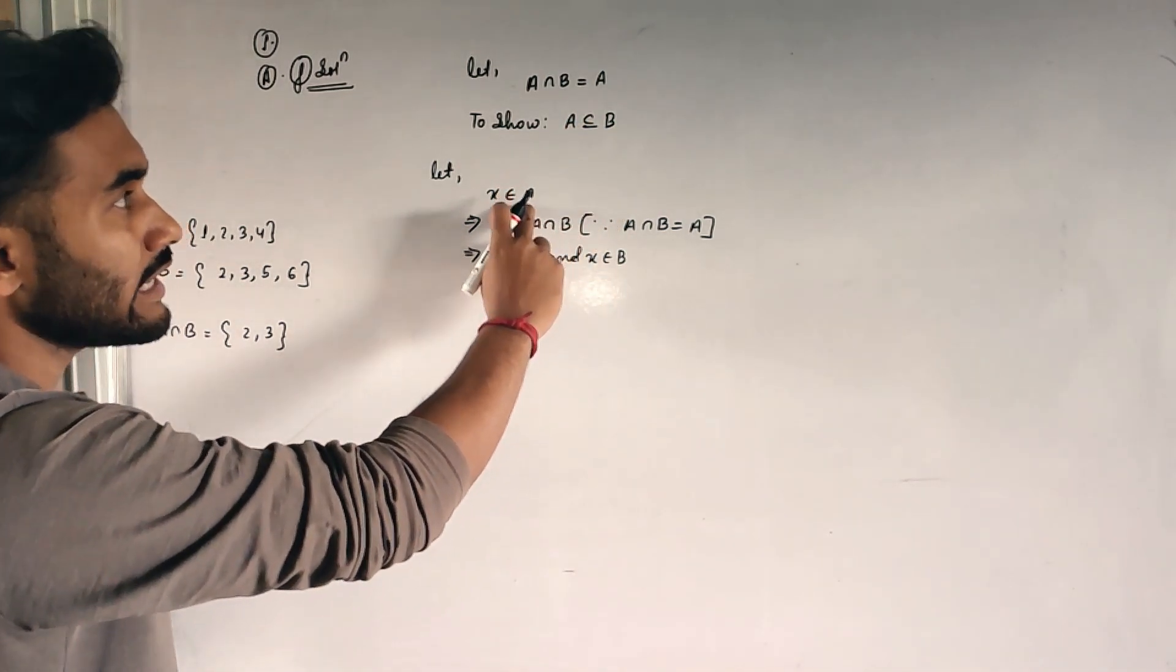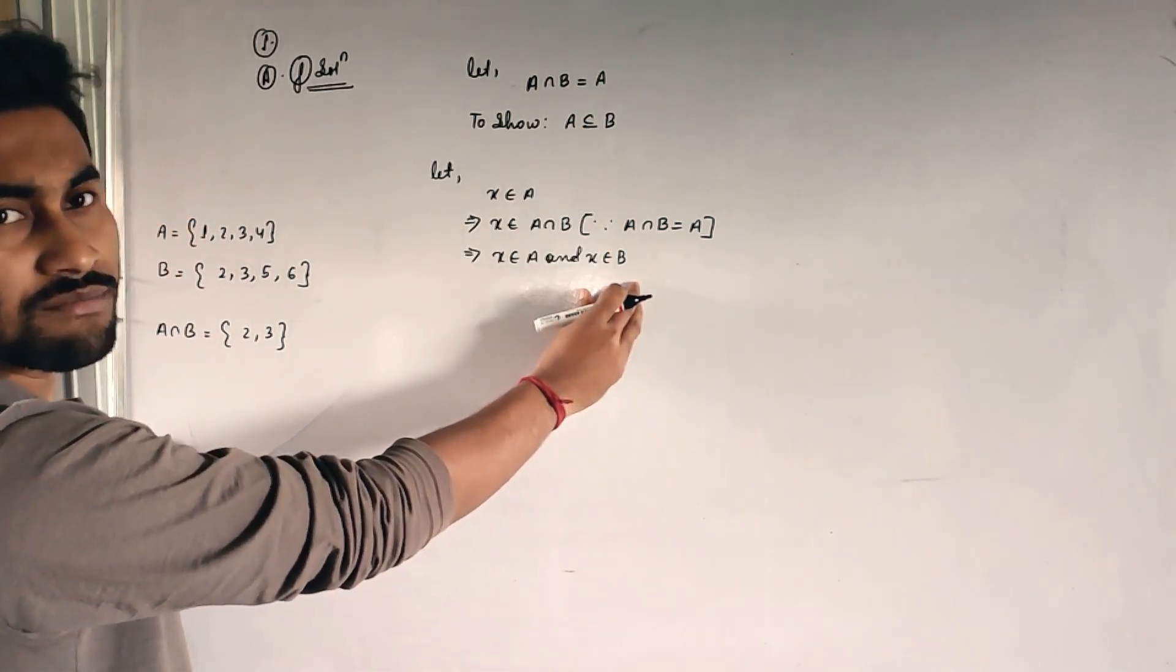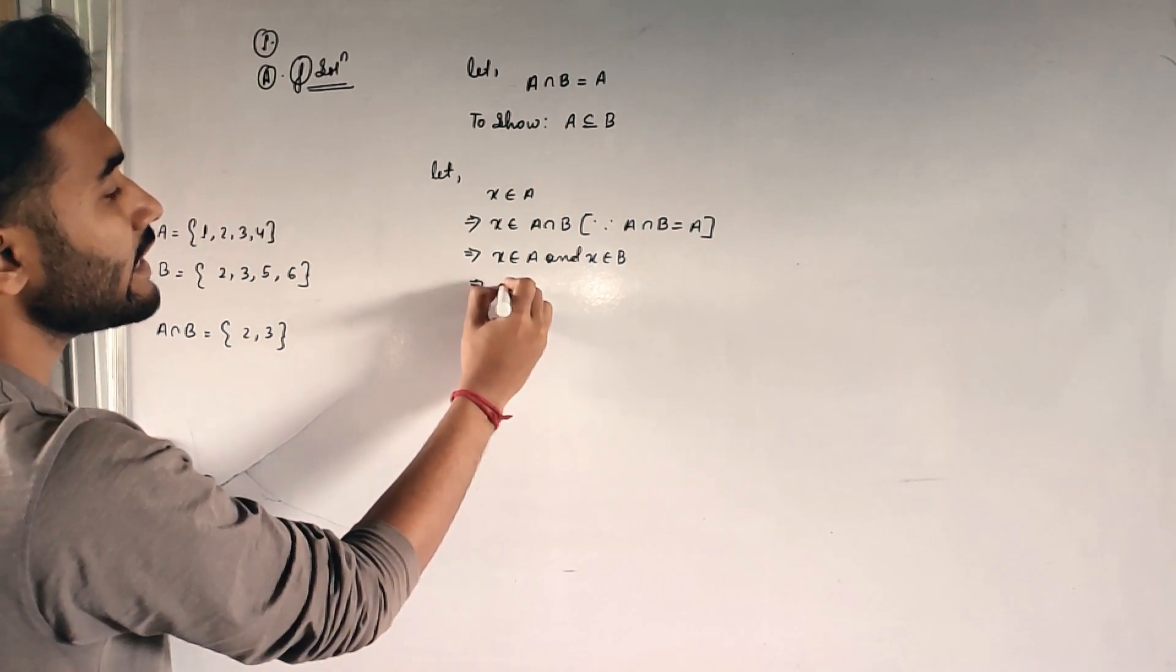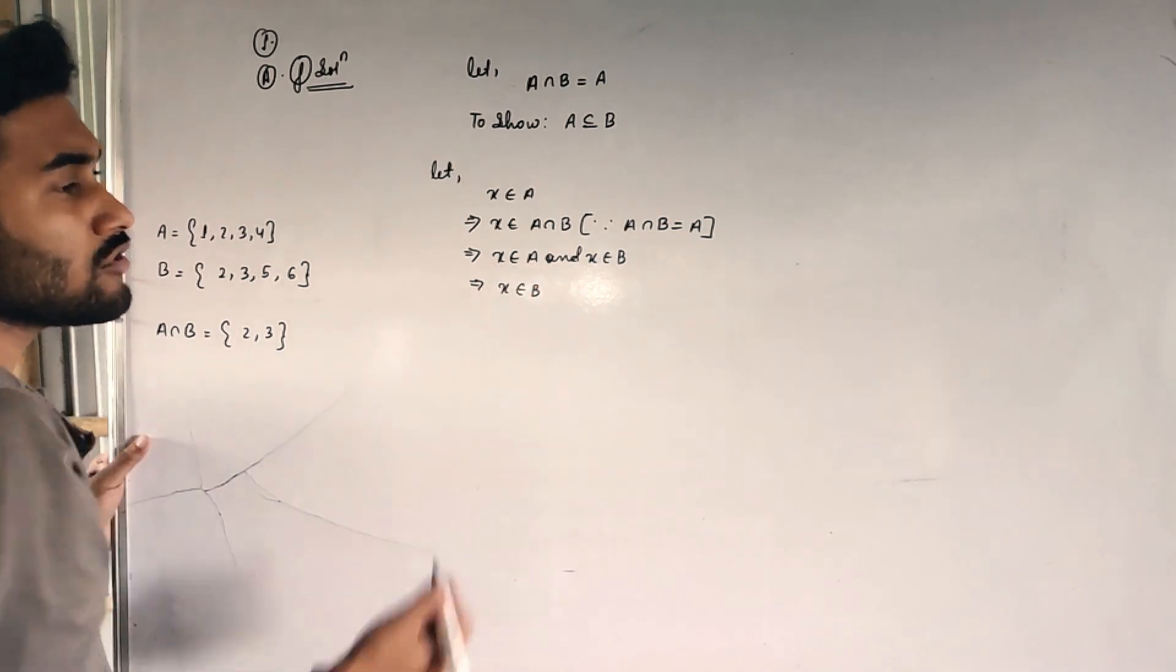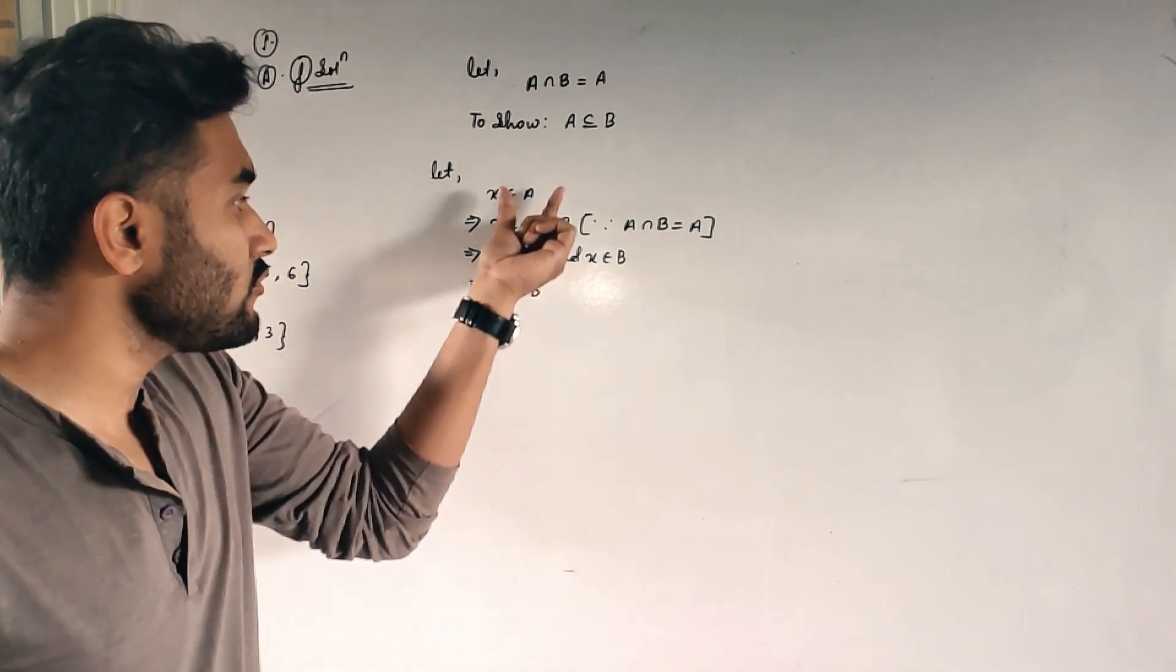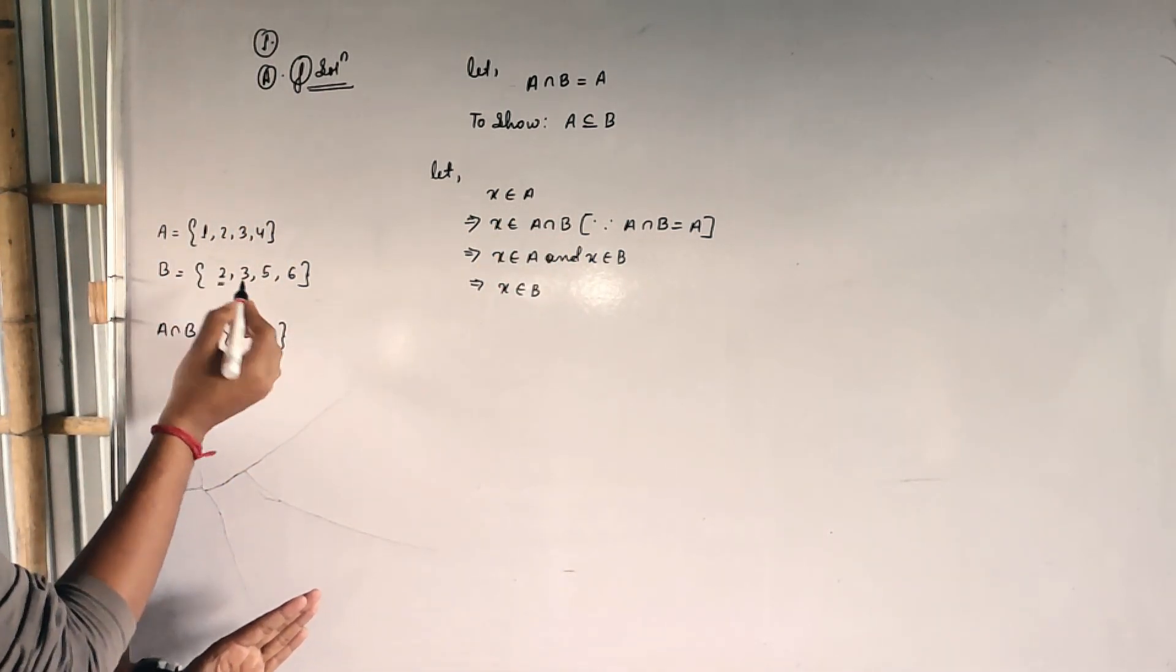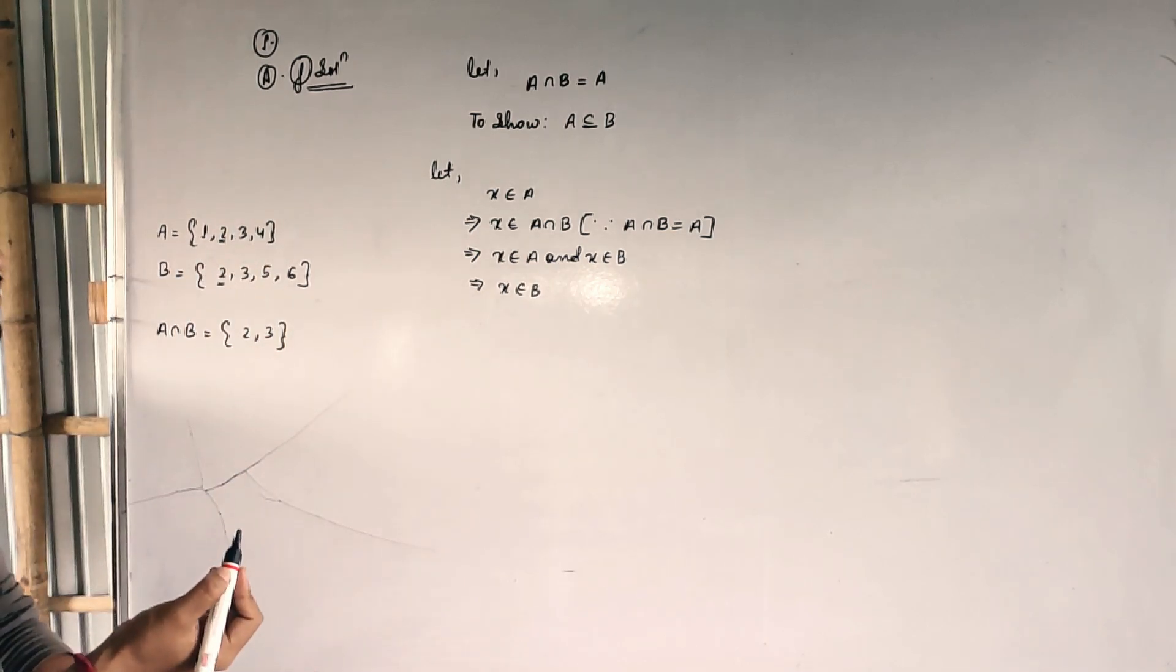So I am sure that if 2 belongs to A intersection B, then 2 will obviously stay in A and 2 will obviously stay in B also, right?